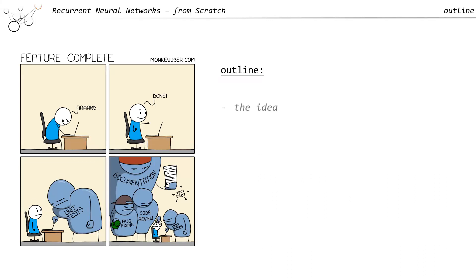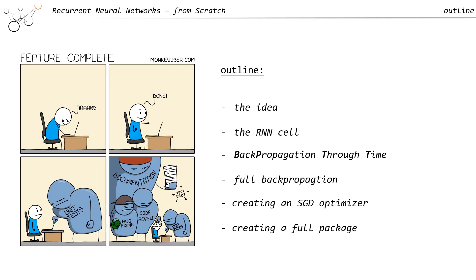The idea of this lecture is that we first start with the RNN itself, so what an RNN is, what kind of different RNNs exist, and the whole context why people came up with RNNs. Then we want to talk about the RNN cell and backpropagation through time, and of course the full backpropagation. Then we want to use our stochastic gradient descent optimizer and modify it, and at the end we want to train and run our RNN and put this into a full package.